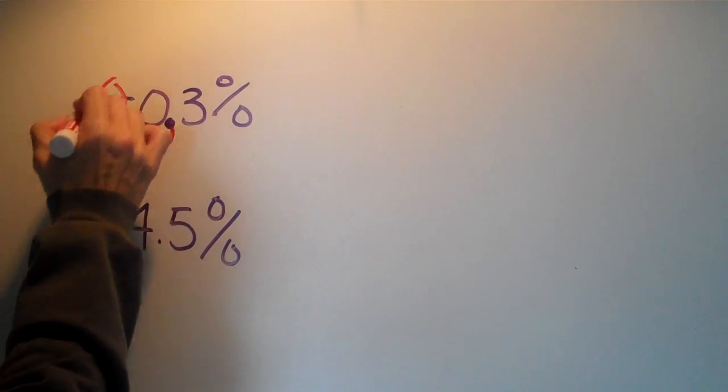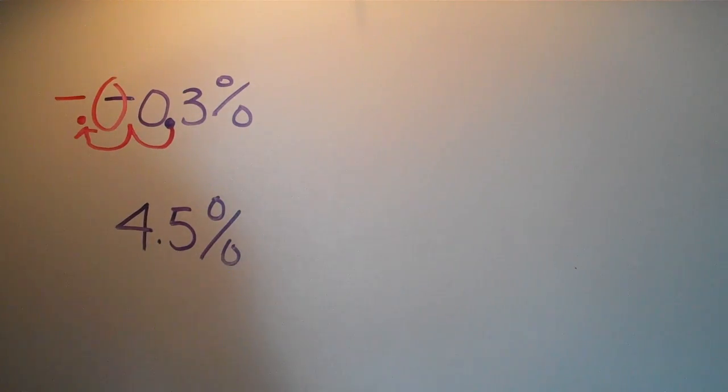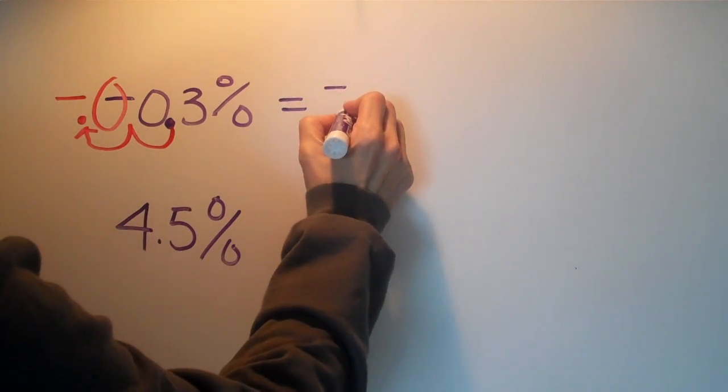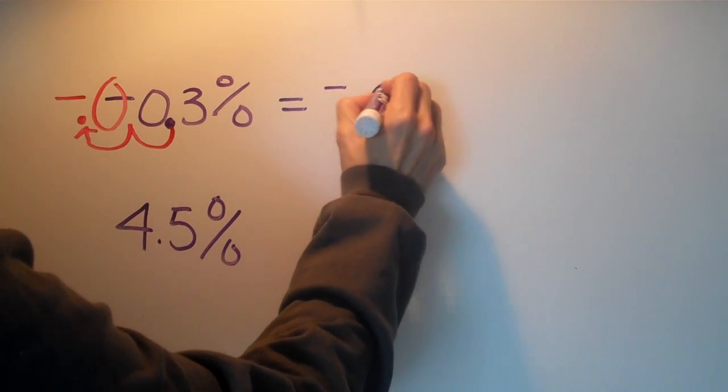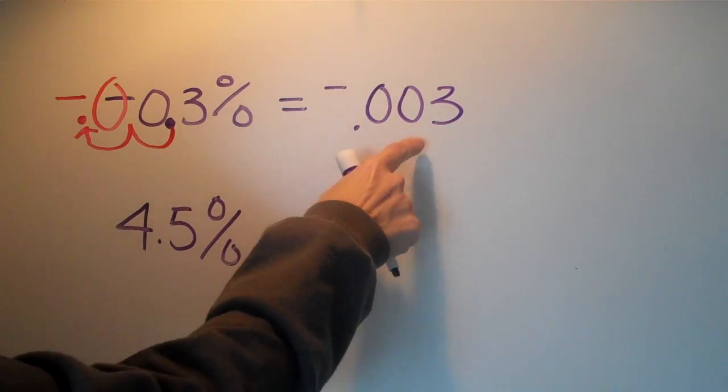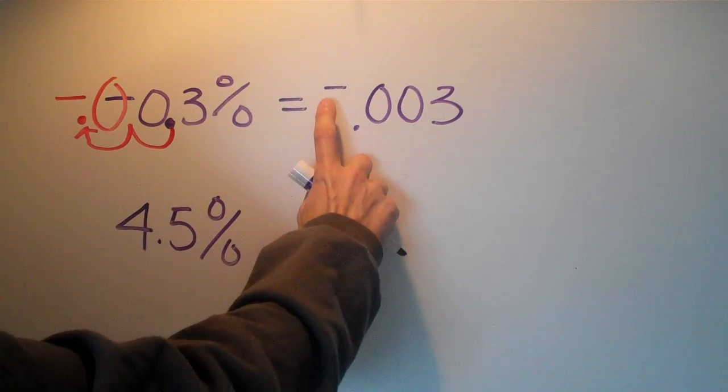We add in our zero, put the decimal in its new place, and don't forget your negative sign. So changing a percent to a decimal, moving two places to the left, we have tens, hundredths, thousandths - this becomes negative three thousandths.